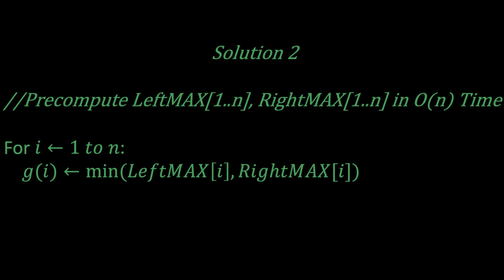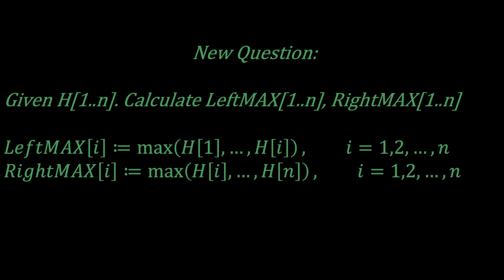But then this now gives us a new problem to chase. Given an array H[1:n], how do we calculate LeftMAX[i], which is the maximum of H[1] to H[i], for i equals 1 to n, and RightMAX[i], both in O(n) time?